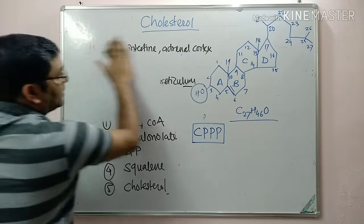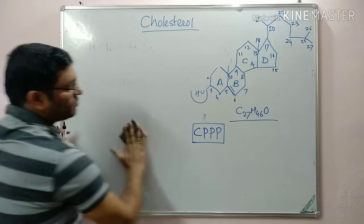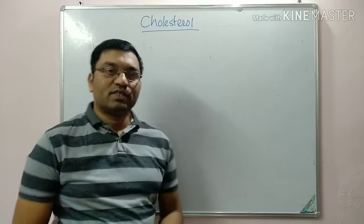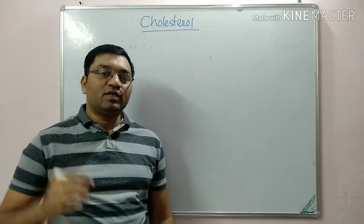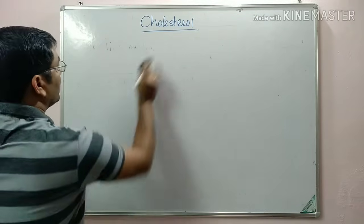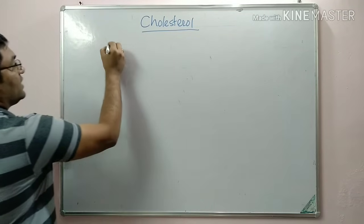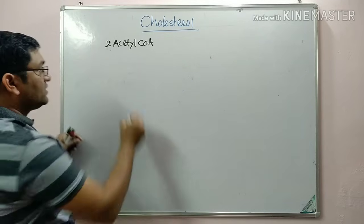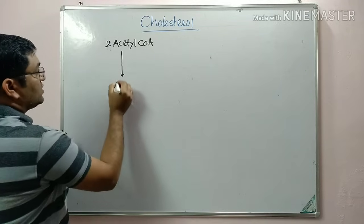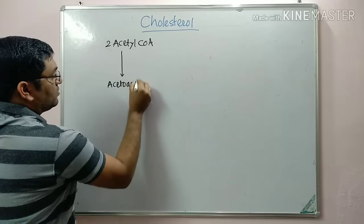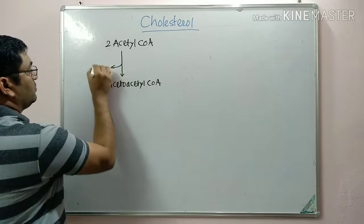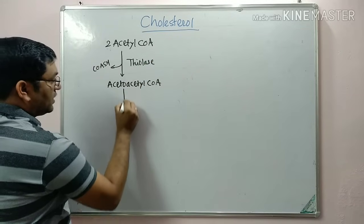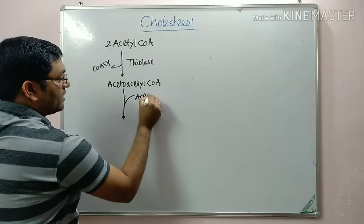The starting material for cholesterol synthesis is acetyl coenzyme A, and it also requires NADPH and ATP. The NADPH required for cholesterol biosynthesis is obtained from the HMP shunt, which provides nearly 60% of the NADPH needed. The process starts with two molecules of acetyl coenzyme A, which condense in the presence of the enzyme thiolase, forming acetoacetyl coenzyme A.